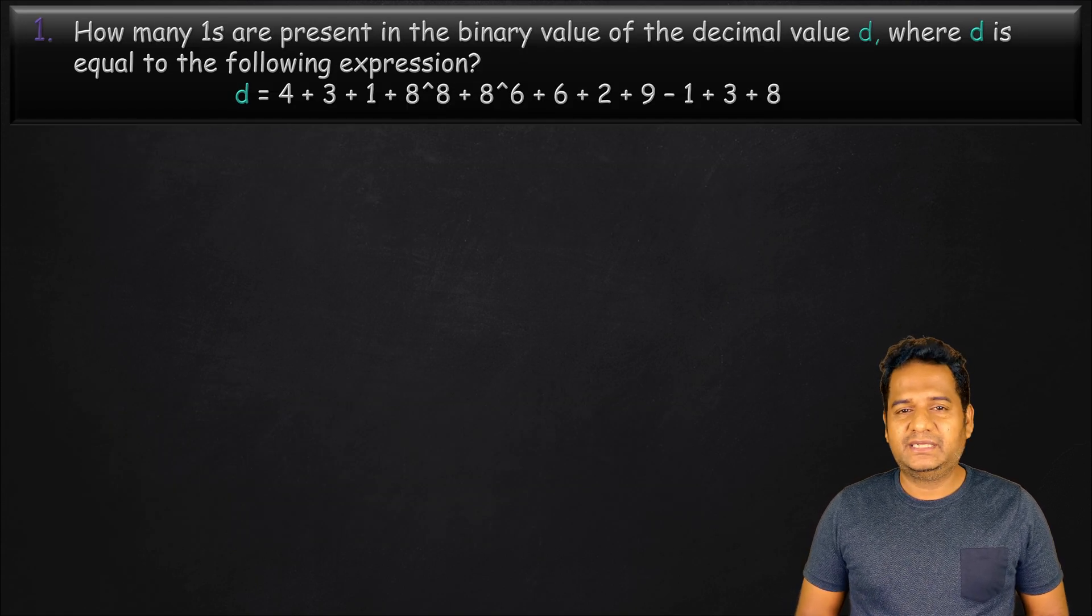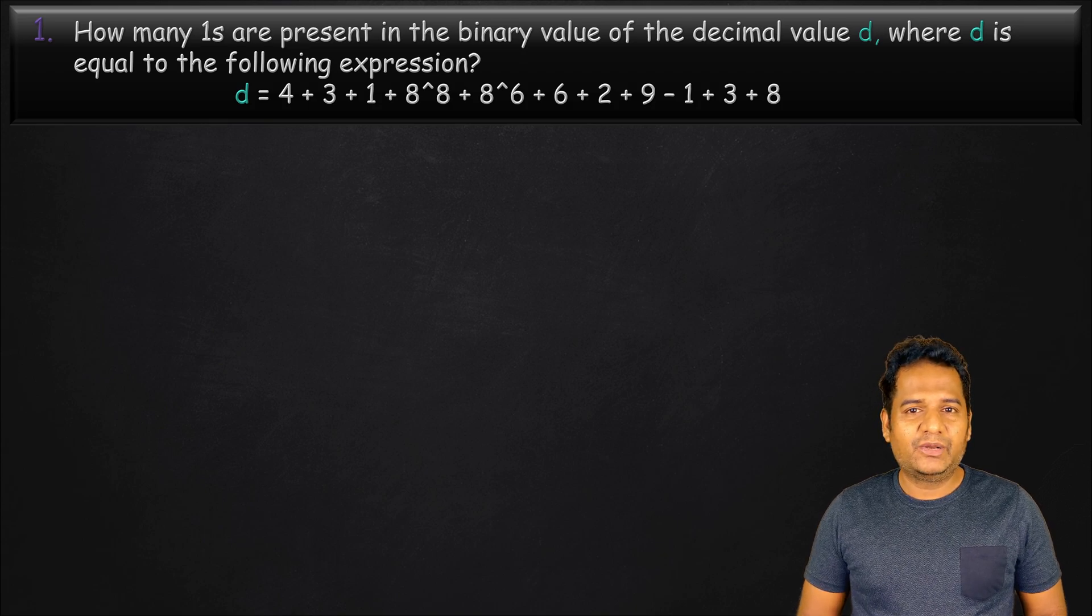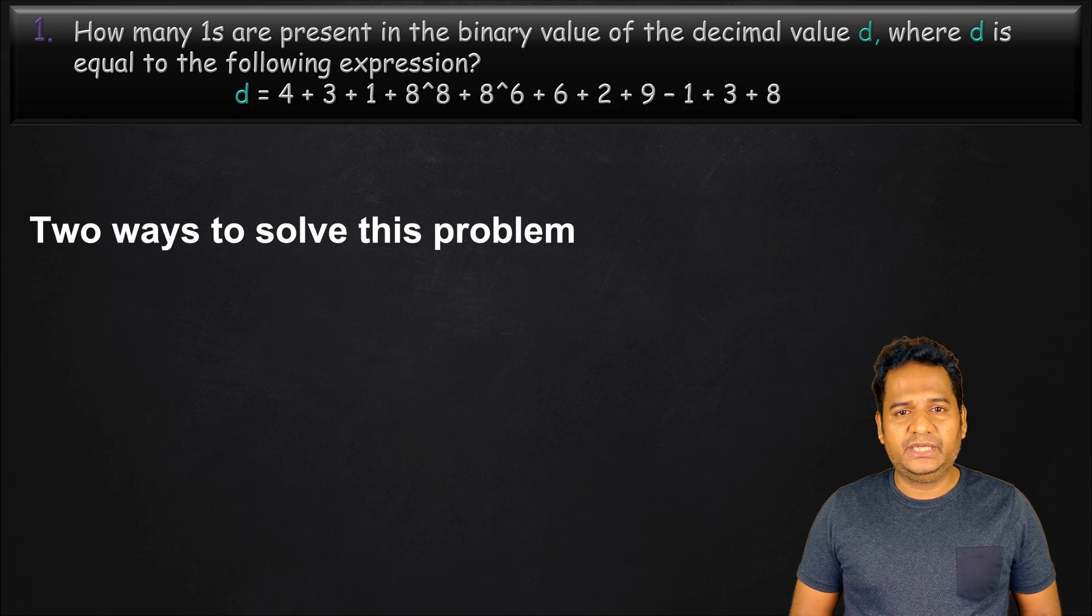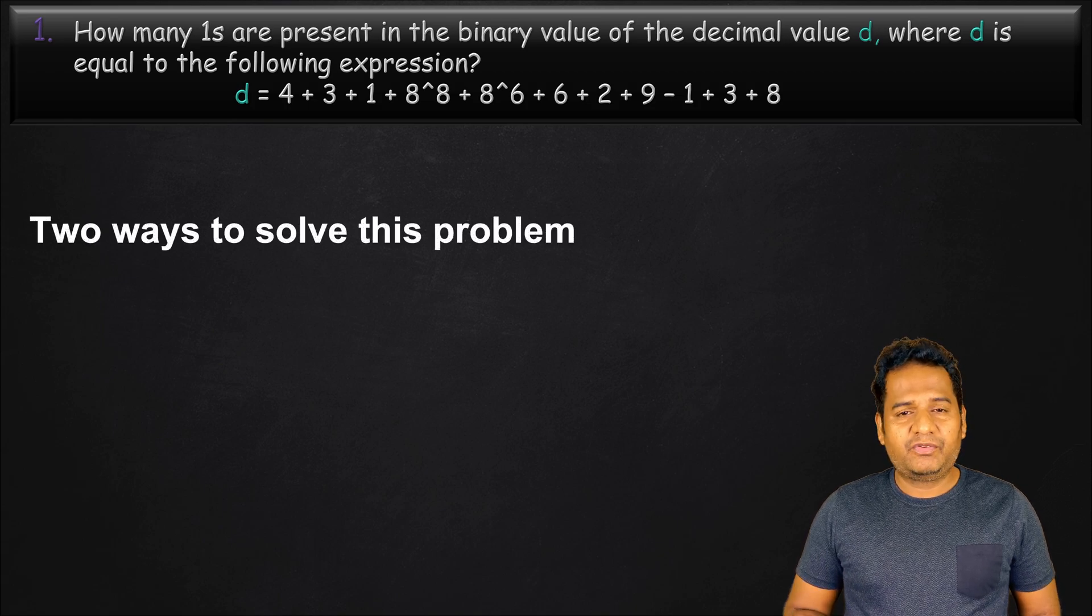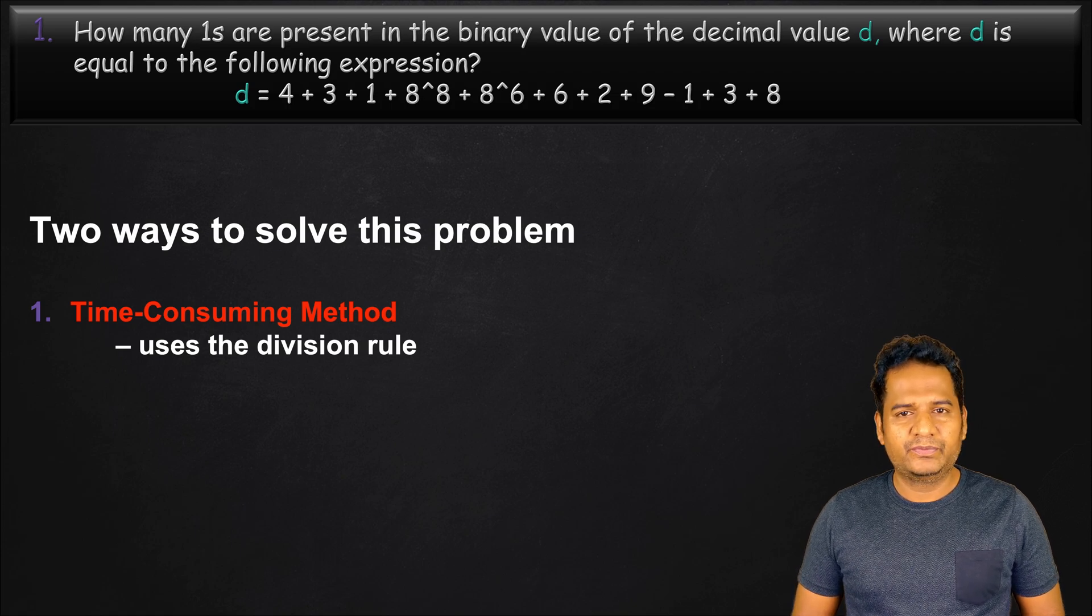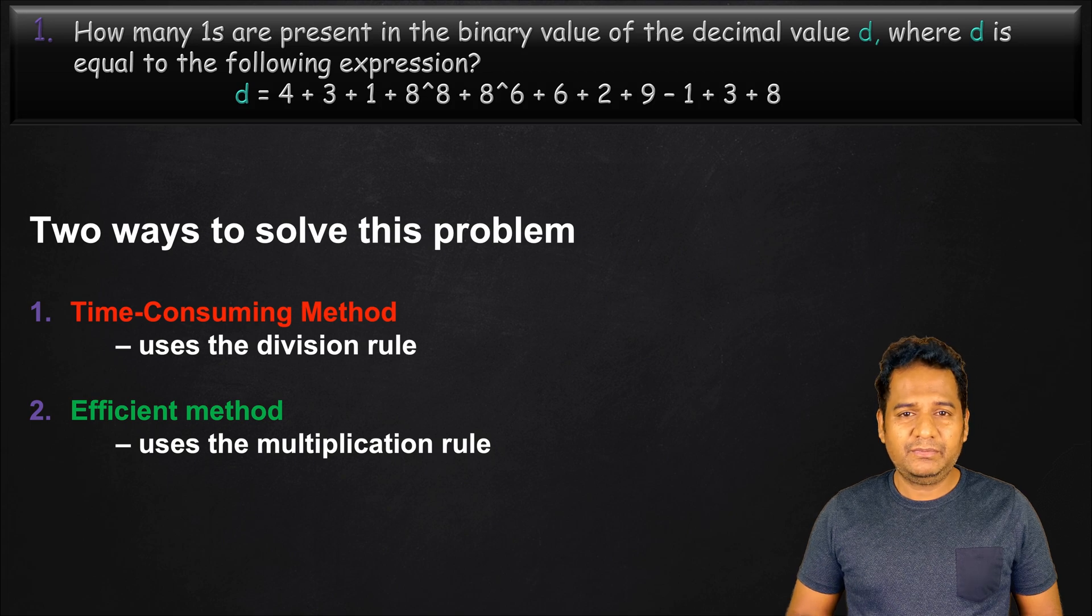How many ones are present in the binary value of the decimal value d where d is equal to the following expression? This can be solved using two methods. The first method is very time-consuming but easy to do, while the second method is very efficient but requires some thinking.